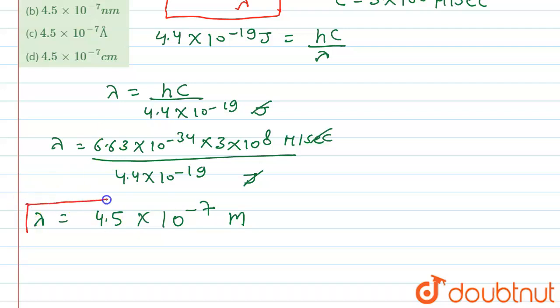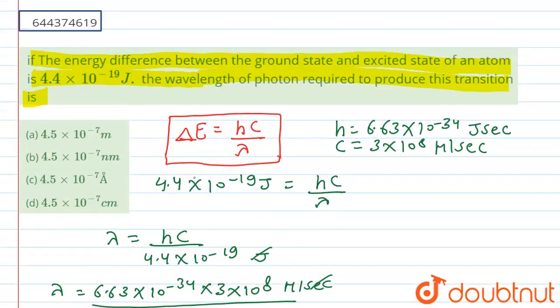So λ, that is the wavelength, equals 4.5 × 10^-7 meters. So if we check the options here we will find out that option A is our correct one, that is 4.5 × 10^-7 meters.